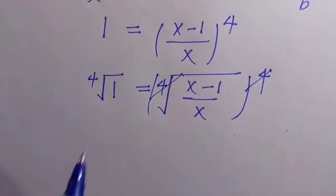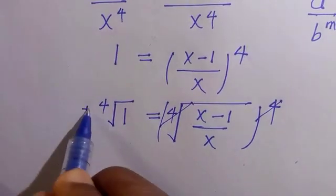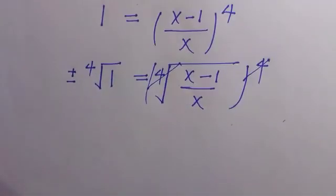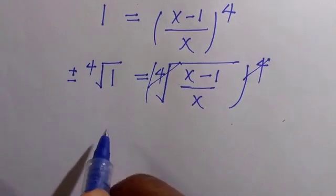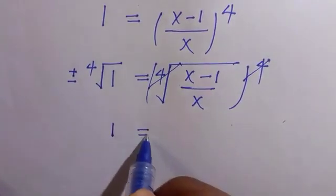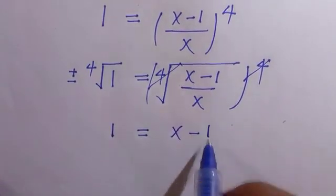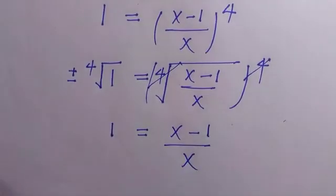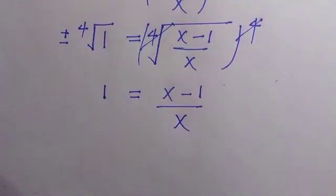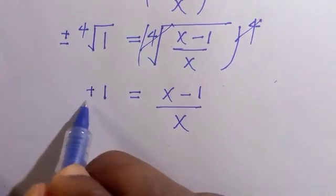We have this at the left hand side, and we take plus or minus. The result of this is 1 equals (x minus 1) divided by x, and we shouldn't forget that it's plus or minus.